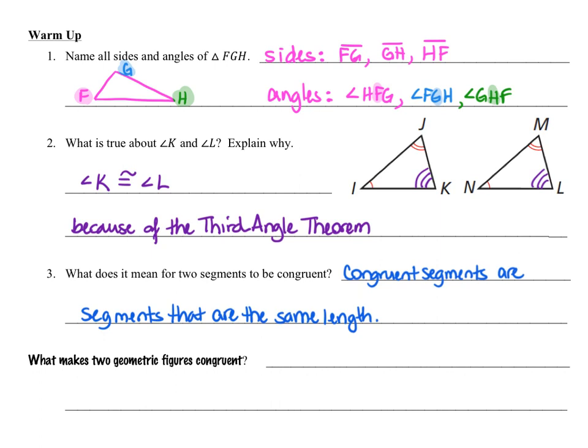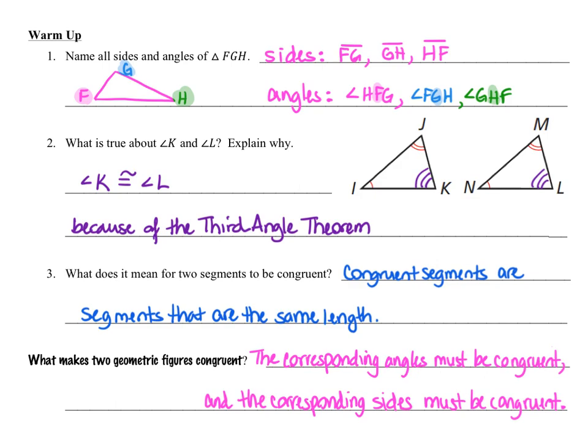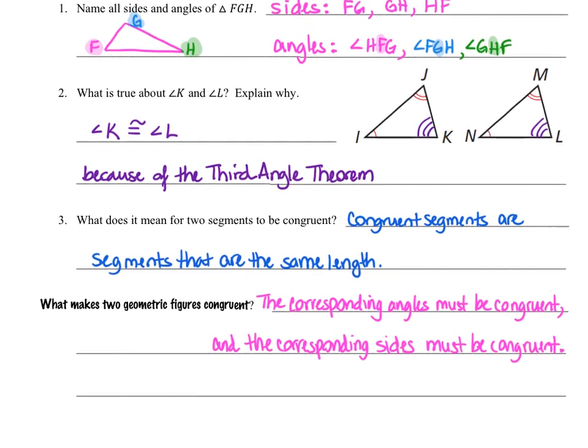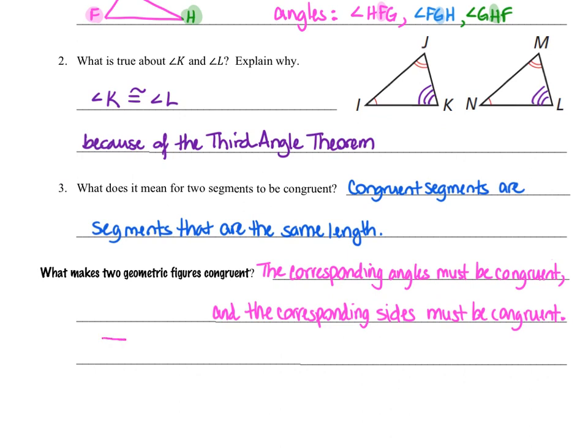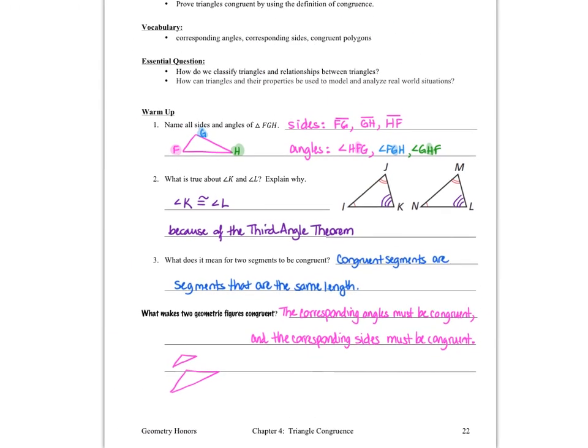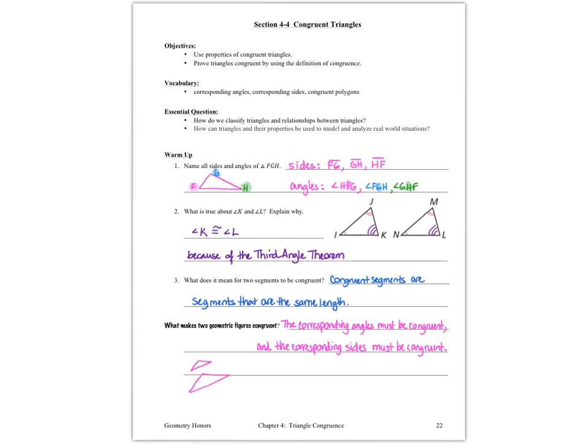All of these questions in the warm-up have really been leading us towards this idea of congruent geometric figures. As we reflect on the questions that we've just answered, we realize that in order for two geometric figures to be congruent, they need to have congruent corresponding angles and congruent corresponding sides. It wasn't very long ago that we learned about dilations, transformations where we have two geometric figures that have the same angle measurements, so they have the same shape, but they have different sizes. So that dilation introduces two different geometric figures that are not congruent, but they are what we call similar. For right now, we're going to say that in order for two geometric figures to be congruent, we need to have congruent corresponding angles and congruent corresponding sides.